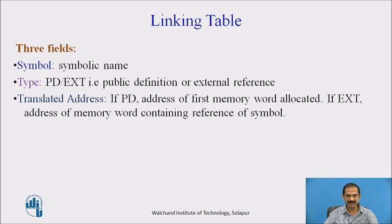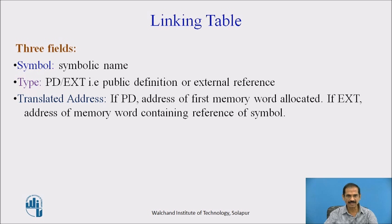A linking table has three fields: a symbol which has a symbolic name; a type which is either a public definition or an external reference; and a translated address if it is a public definition, or the address of the first memory word allocated, and if it is an external reference then it is the address of the word containing the reference of the symbol.